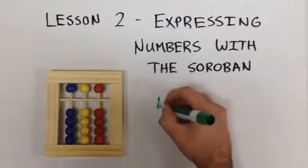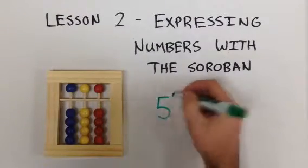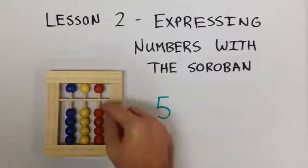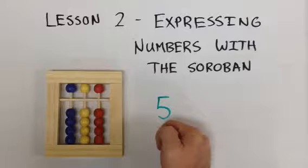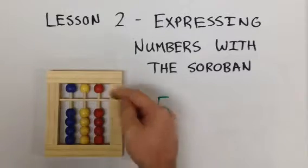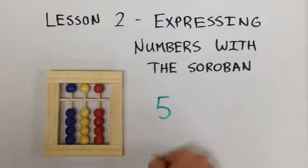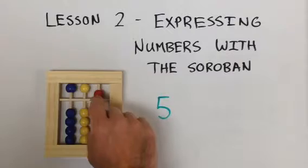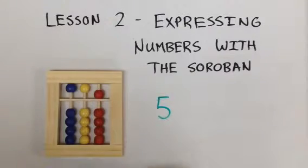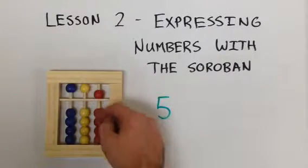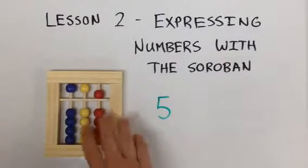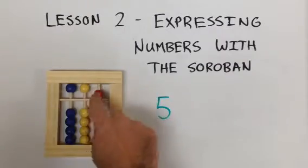How about the number 5? To express the number 5 with our abacus, we only have 4 lower beads. Remember, the upper red bead counts as 5. So we move that down to the answer line and don't move any of our lower beads up. This shows us the number 5.